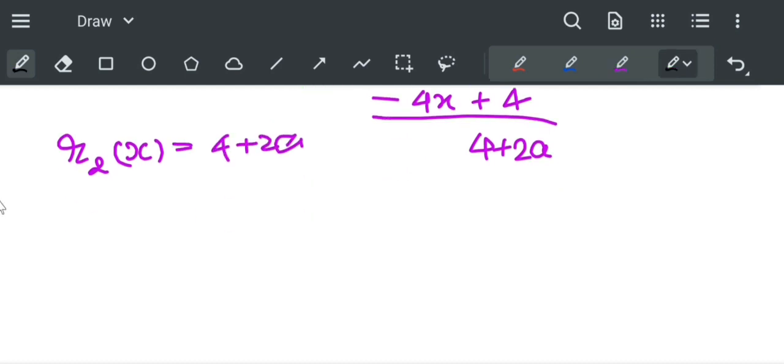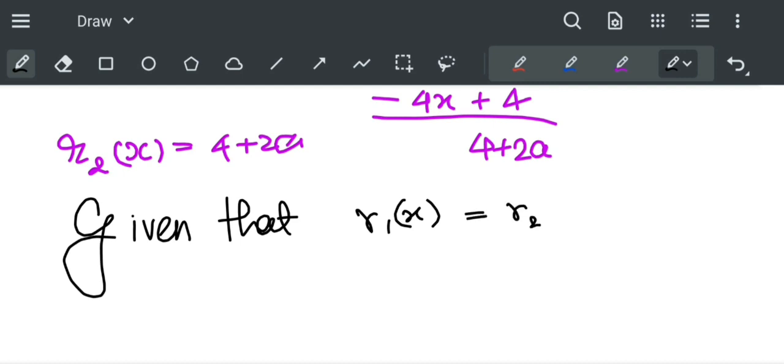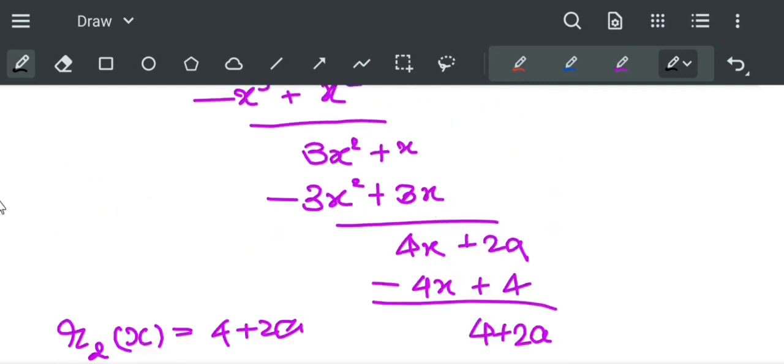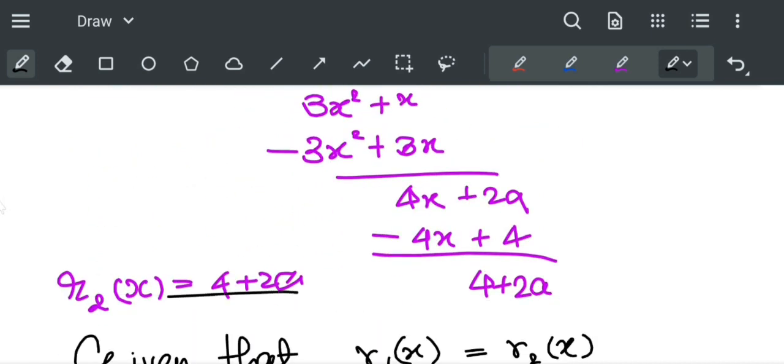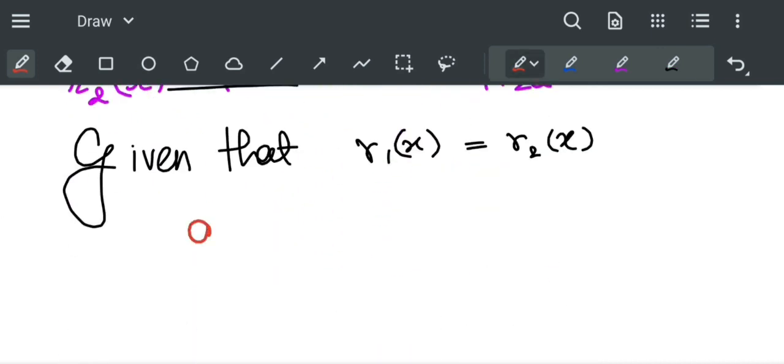It is given that R₁(x) equals R₂(x), which implies 9+a = 4+2a. This gives us a = 5. Thank you.